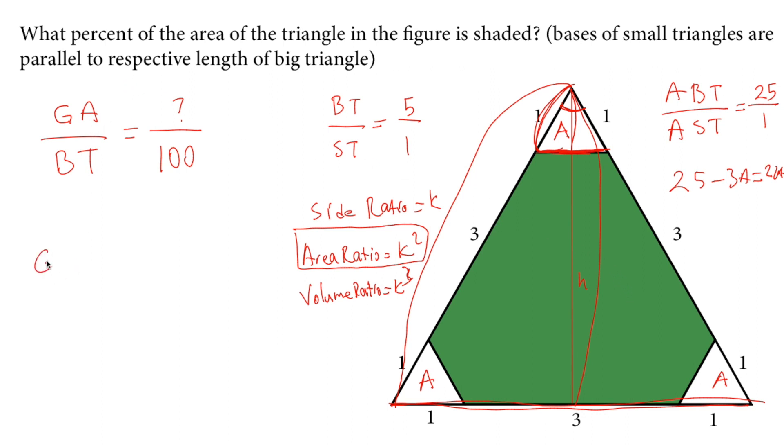We can now make the comparison of green area to big triangle area. The green area will be 25a minus 3a, which is 22a. So 22a over the big triangle which is 25a. The a's will cancel. As we said earlier, we need to write the denominator as 100, so if we multiply by 4, the top should be multiplied by 4, giving us 88 over 100. This corresponds to 88 percent.